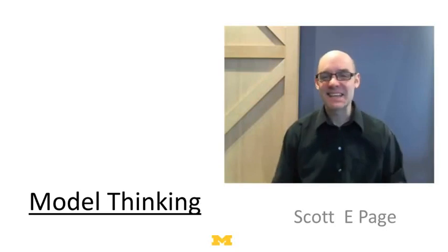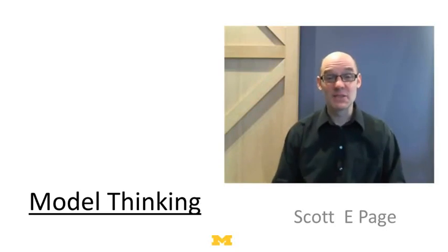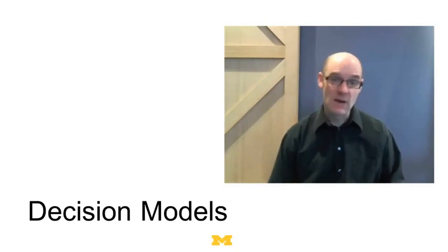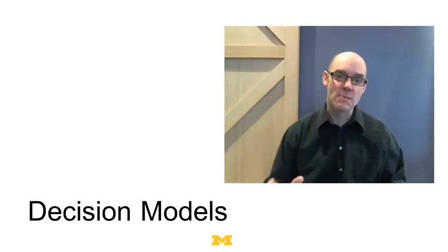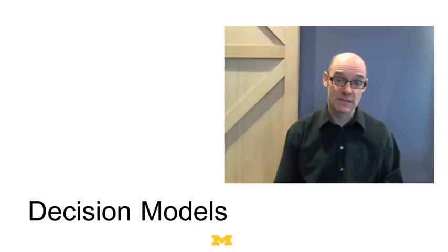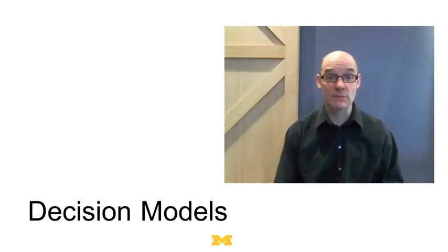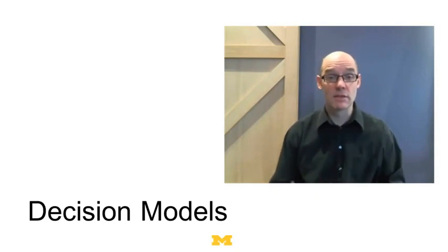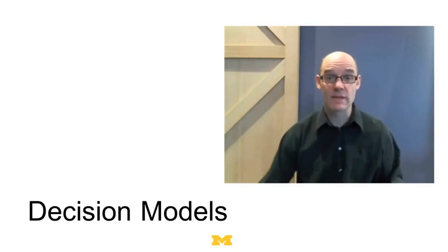Hello. In this set of lectures, what we're going to do is look at some decision models. These are models of how people do make decisions and how they should make decisions. We're going to do a bunch of types: multi-criterion decision making models, some spatial models, and some decision theory models under uncertainty. So that's the outline.